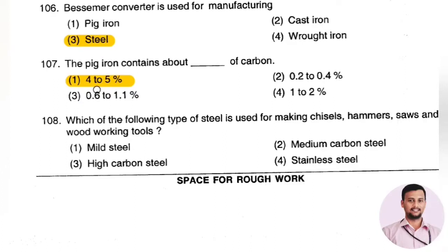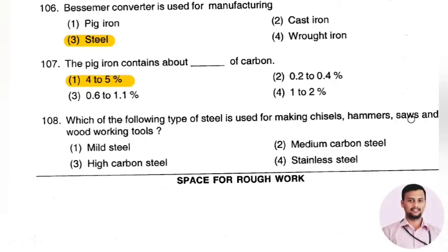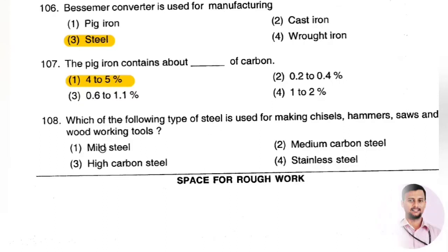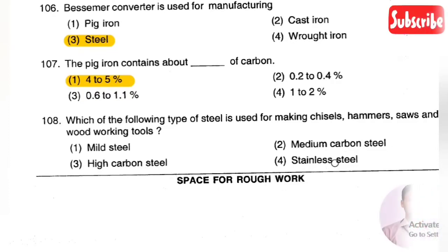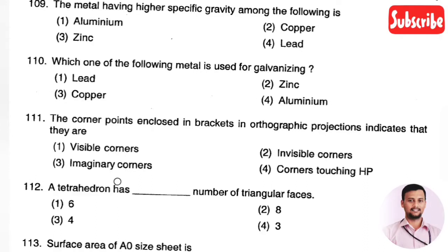The next question: which type of steel is used for making chisels, hammers, saws, and woodworking (carpentry) tools? Options are — Option 1: mild steel, Option 2: medium carbon steel, Option 3: high carbon steel, Option 4: stainless steel. The right answer is Option 3, that is high carbon steel.